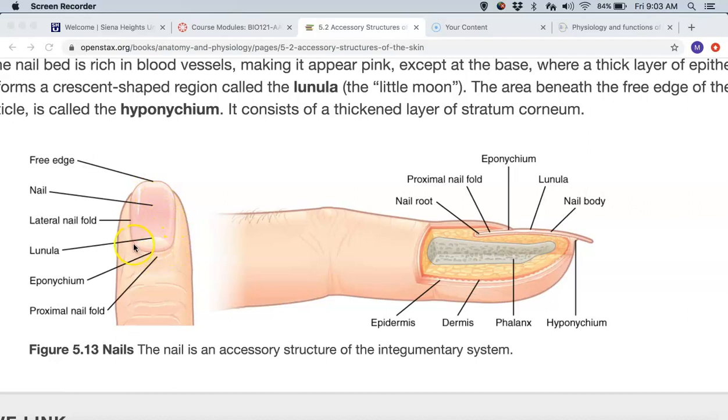A couple other things to notice is this epithelial cell around here, often known as the nail cuticle, is also referred to as the eponychium. Eponychium is the scientific name for the nail cuticle. And it's just a roll of stratum basale cells that are producing the, that are overlying the area that produces the nail. And then if you come over here, you can see a couple other things. If you notice right underneath the edge of the nail is this layer of epithelial cells called the hyponychium. So the eponychium here at the cuticle and the hyponychium is where the epithelial cells meet the bottom of the nail body. So hyponychium on the bottom and then eponychium on the top.